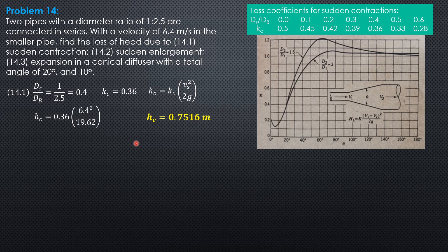For sudden enlargement, the formula is v sub small minus quantity v sub small minus velocity in the bigger pipe quantity squared over 2g.